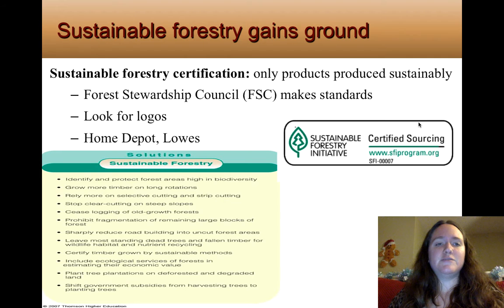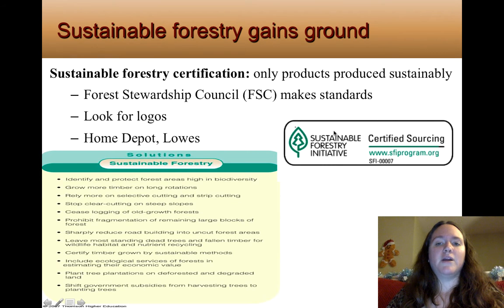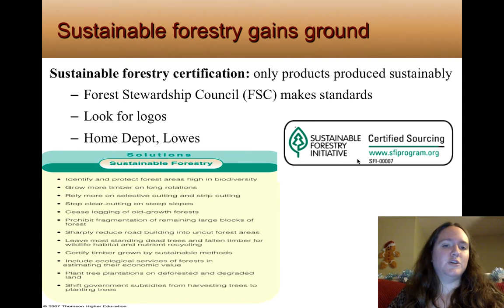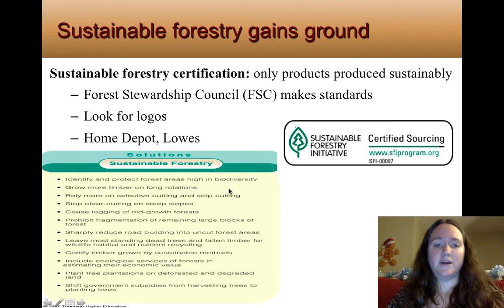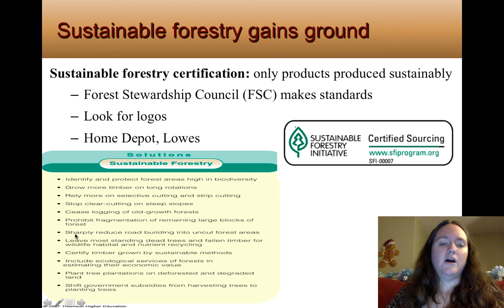Some things we can do: we can sustainably cut down our trees. There's something called the Sustainable Forestry Certification — you may see it on paper products — which tells you that you're buying a product that has been sustainably forested. Places like Home Depot and Lowe's carry this on their products. Sustainable forestry methods include identifying and protecting high-biodiversity forest areas, growing timber on long rotations, and stopping clear cutting on steep slopes which causes more runoff.